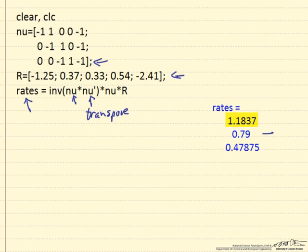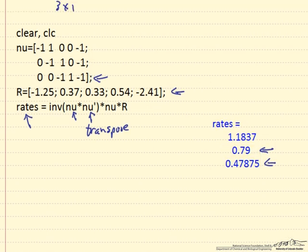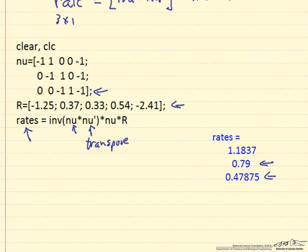Then here is our result, it is the rate of the first reaction, rate of the second reaction, rate of the third reaction, so we have taken the production rates and now determined the rates of the three reactions using a least squares fit.